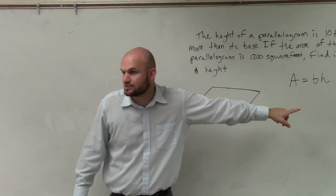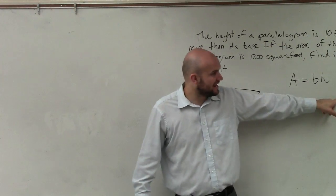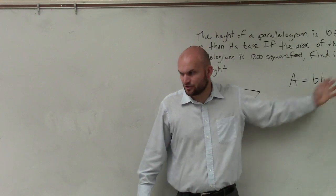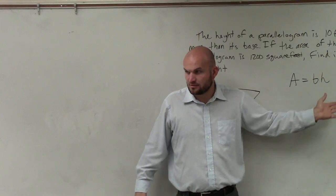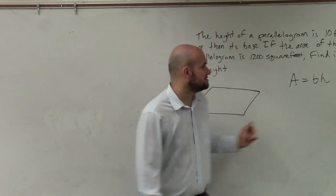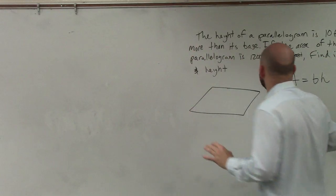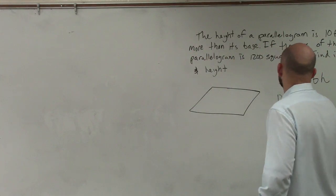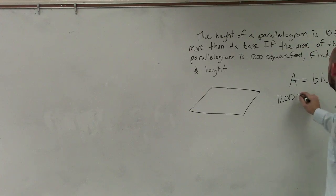Do you guys see how that equation works? Now, can I replace h with 10 plus b? Are those the same thing? Yes. So what I'm going to do is say the area is 1200 square feet. 1200 square feet equals base times my height, which is 10 plus b.